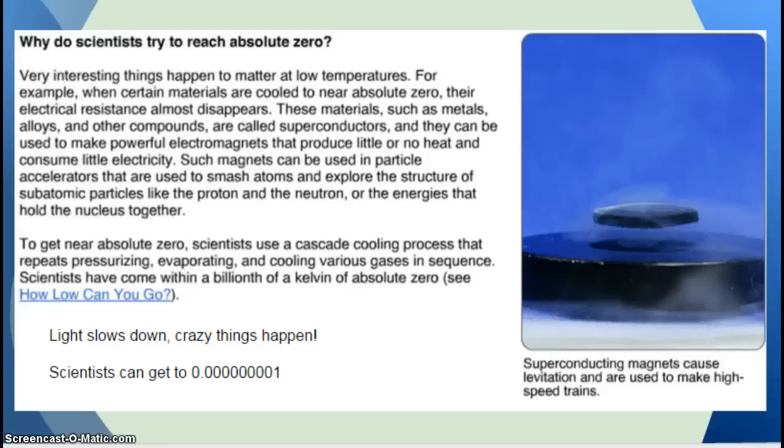To get near absolute zero, scientists use a cascading cooling process that repeats pressurizing, evaporating, and cooling various gases in sequence. Scientists have come within a billionth of a Kelvin of absolute zero, and this, how low you can go, just shows you that they cool it off in steps.